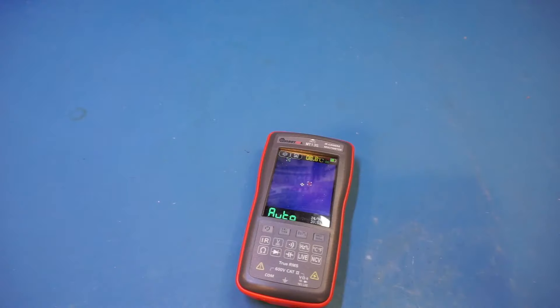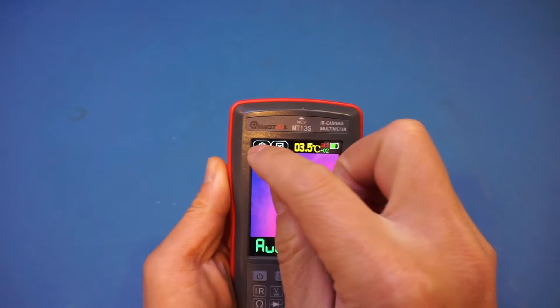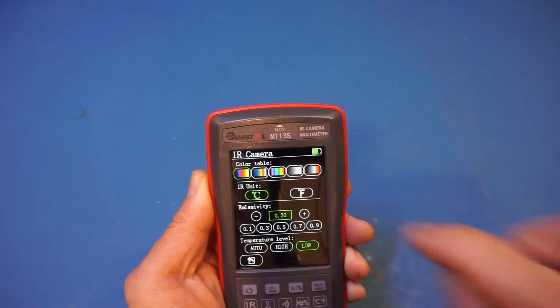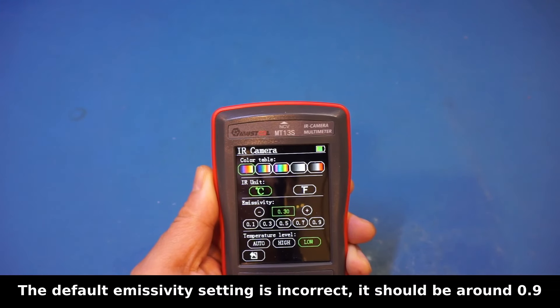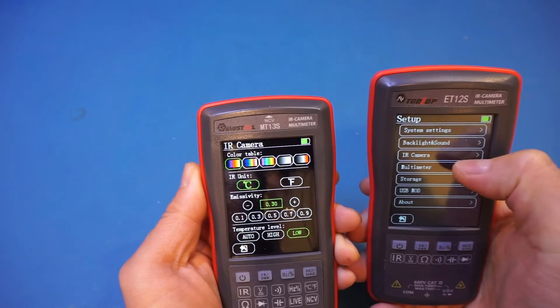While we're still in this thermal camera mode, let's actually take a look at some of the settings here. So to get to the settings, I click on the gear icon, and I go to IR camera. Oh, it seems we do have a few more options here. So let's actually take a look at the older version here. So let's go to IR camera.